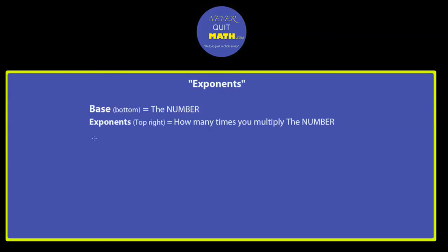Say we got 3 to the second power. The base, which is always at the bottom, is 3, and the exponent at the top is 2. So the number is 3, and we multiply it 2 times because the exponent is 2. So we got 3 times 3. In other words, we multiply the number 3 two times, and this equals 9. Simple enough, right?